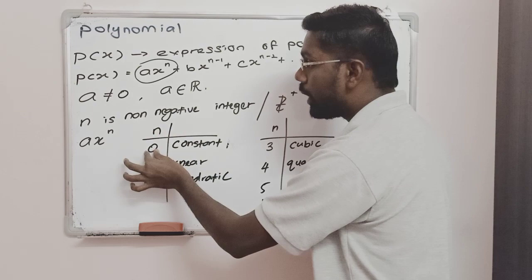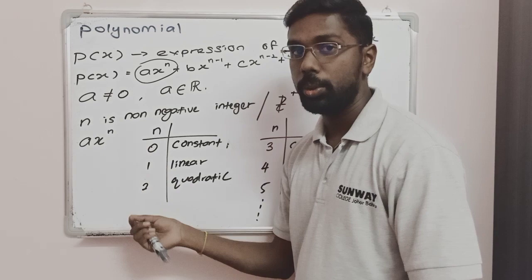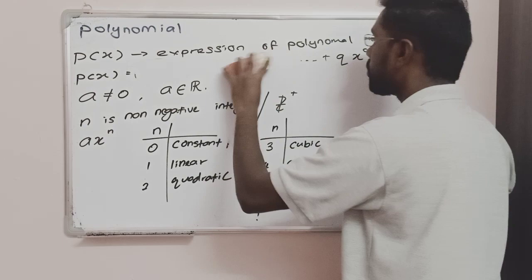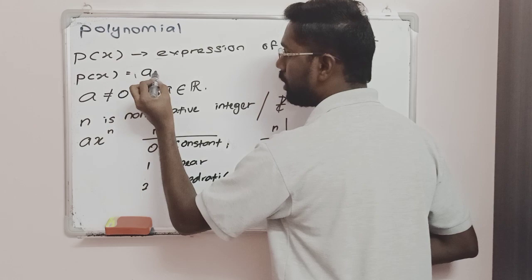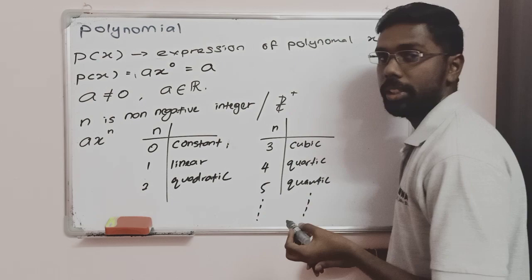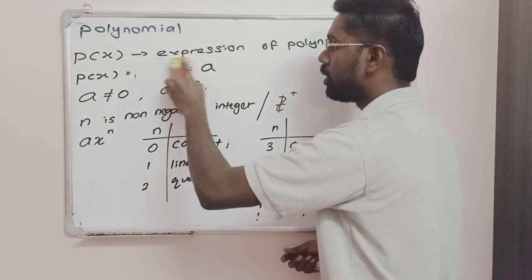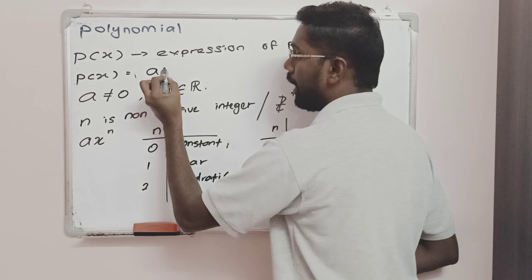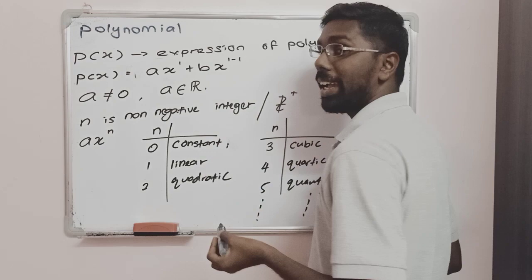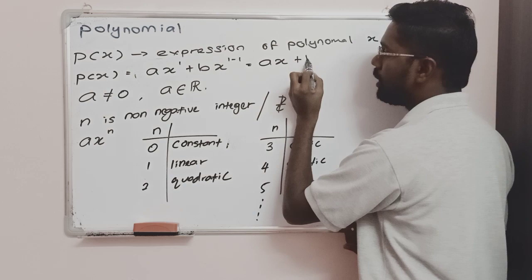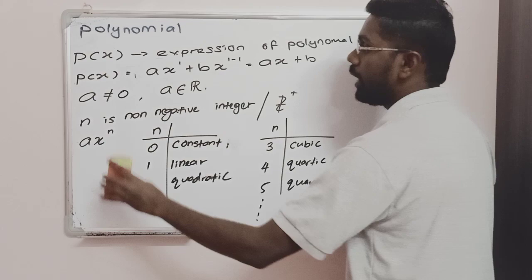Let's find p(x) for different n values. When n is equal to 0, we get ax^0, which means it is just the constant 'a'. Now for the linear case, when n is equal to 1, we get ax^1 plus bx^0, which simplifies to ax plus b. So that is the linear polynomial.